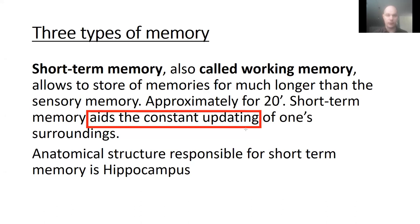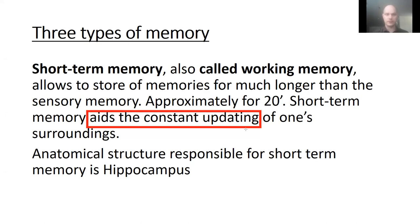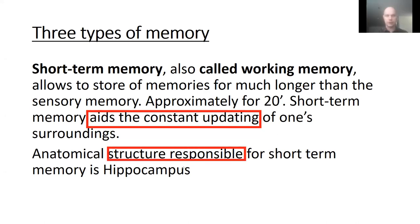Like a computer's RAM — random access memory — short-term memory holds all the information being used right now by the running program at that moment. The anatomical structure responsible for that is the hippocampus. If we damage the hippocampus, short-term memory will be unavailable. A person would remember only what was in the past but would not remember what is going on right now, and in the future would not retrieve any information that occurs after hippocampal damage.